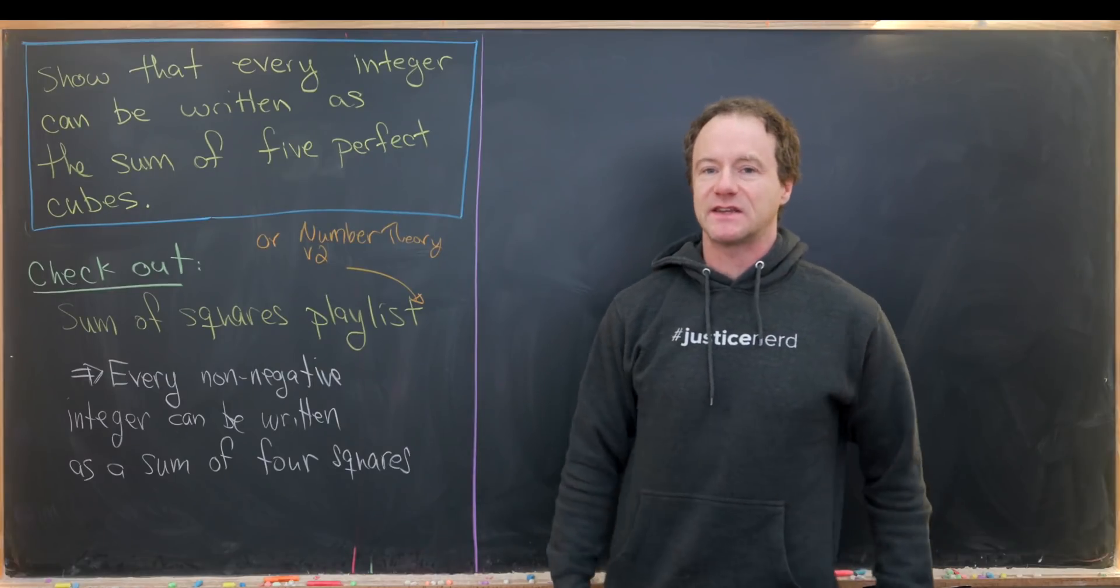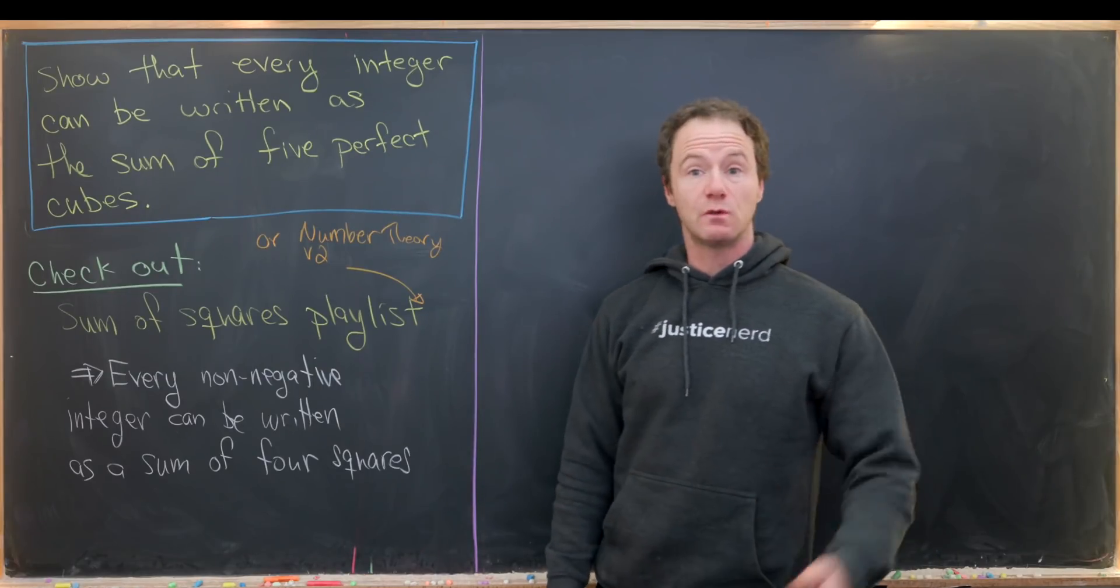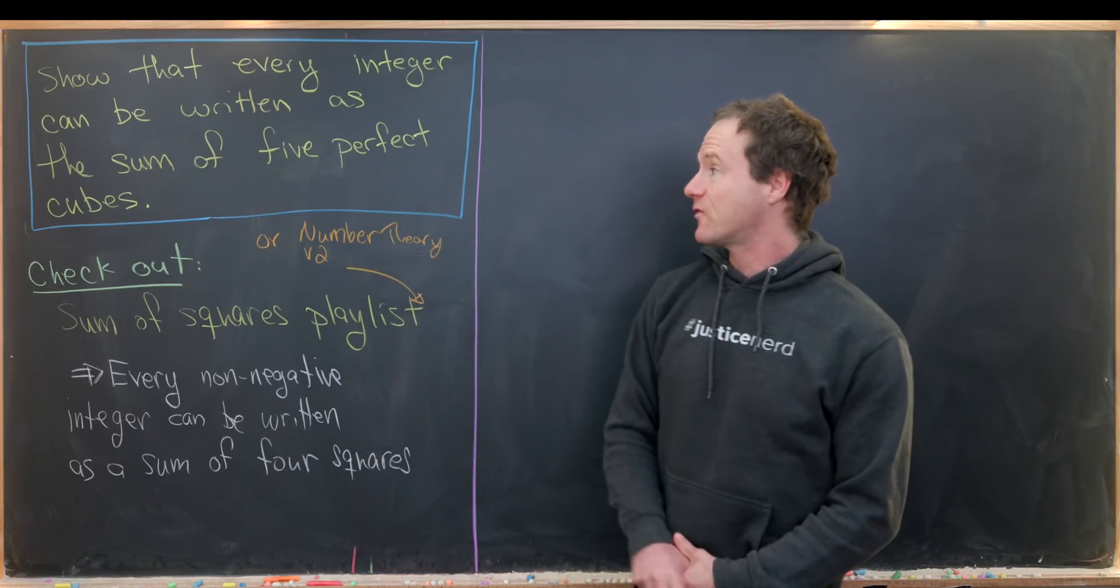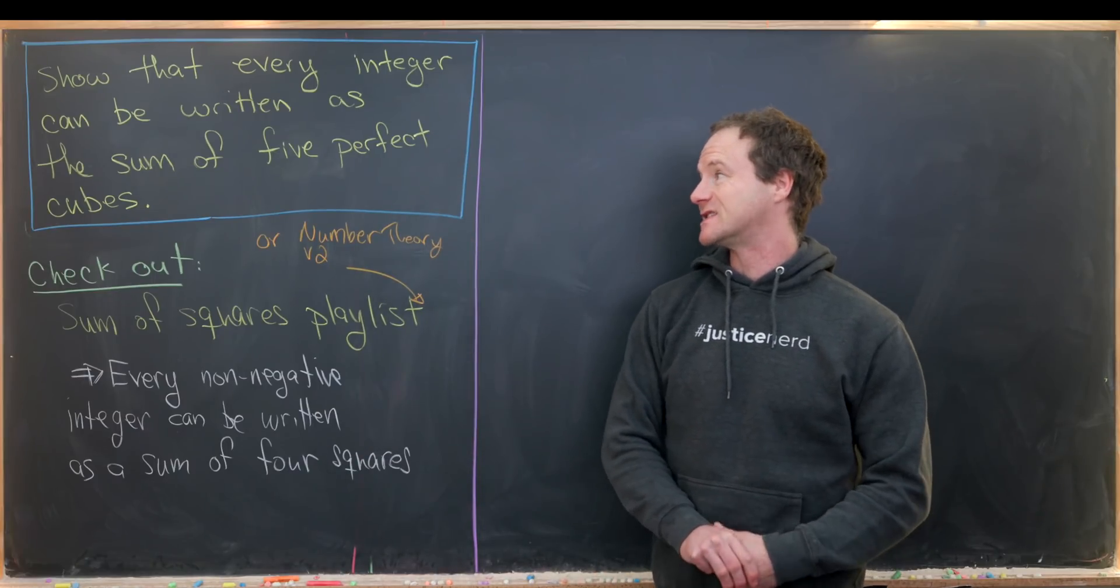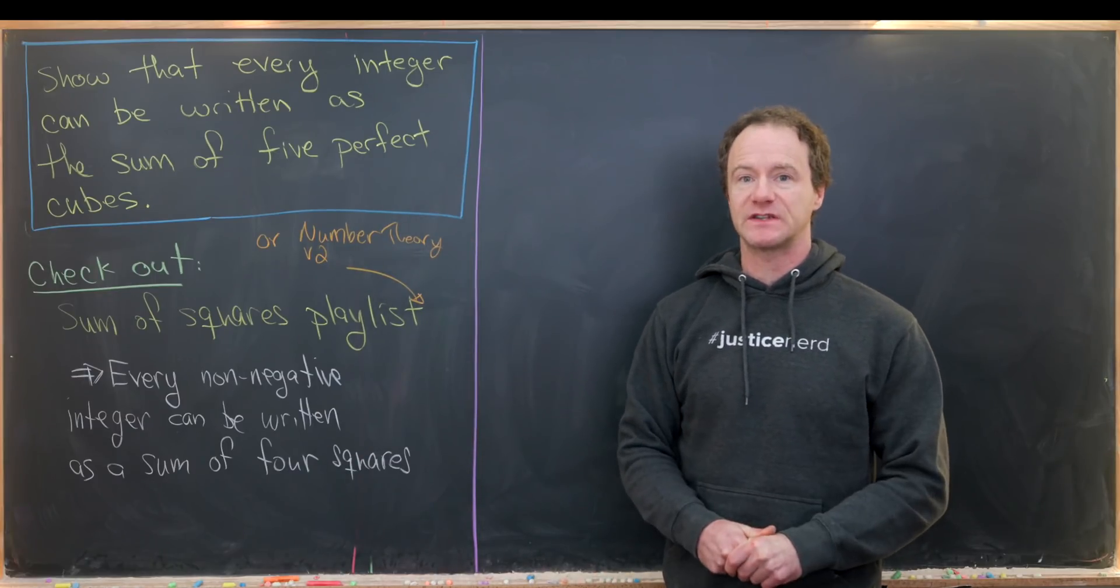Here we're going to look at a nice classic number theory result. We'll show that every integer can be written as the sum of five perfect cubes.